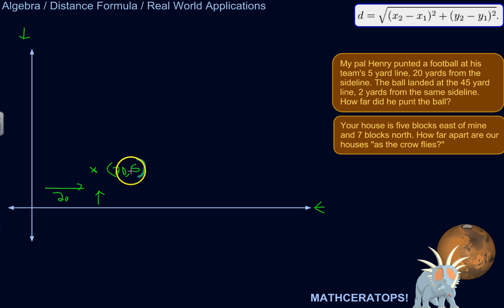So that's the coordinates of the place from which he punted the football. Now let's figure out what the coordinates would be of where the ball landed. So the ball landed at the 45-yard line, up here somewhere, 2 yards from the sideline. Let's mark it there. So it's 2 yards from that same sideline. So the X-coordinate here will be 2. And then it landed at the 45-yard line. So 45 yards from that goal line. So the coordinates would be 2, 45. So now we can ask ourselves, what is this distance?